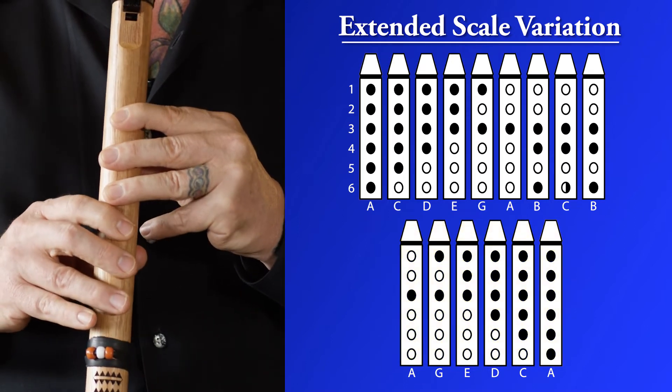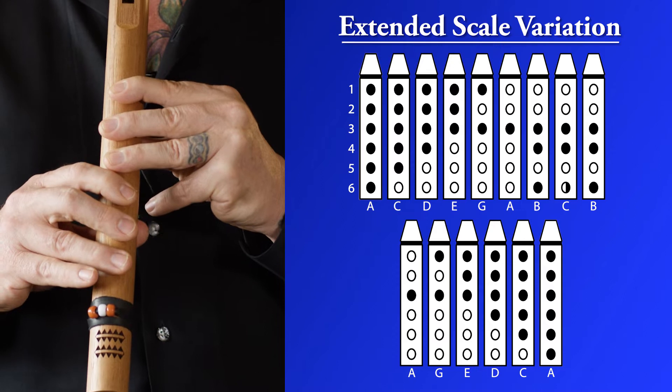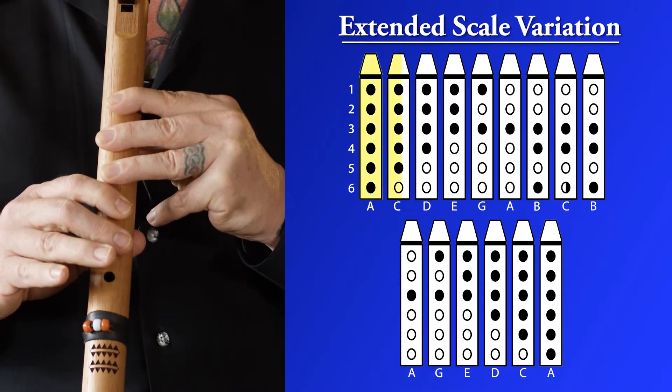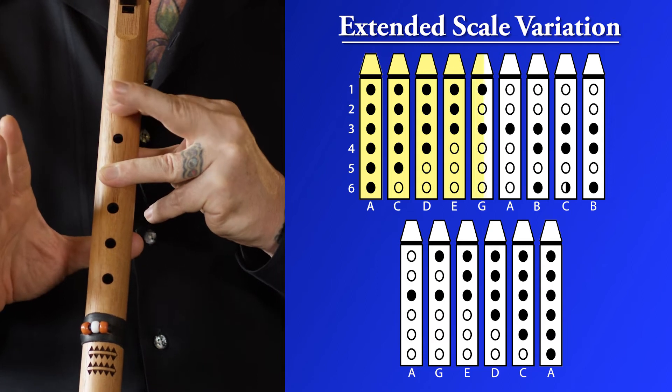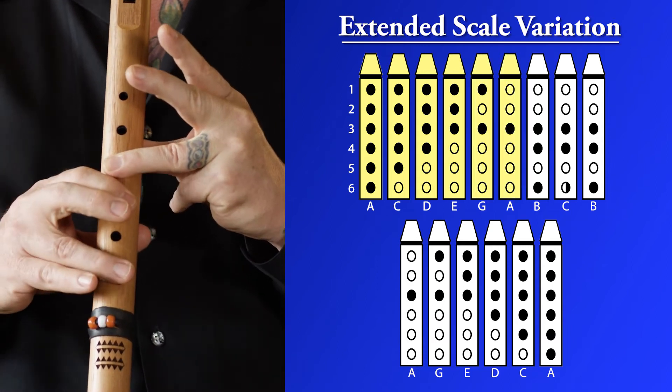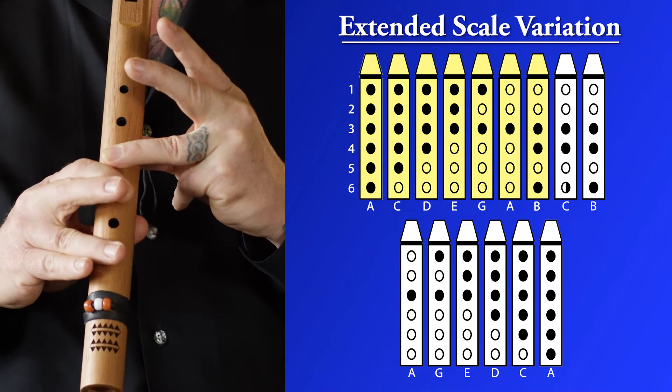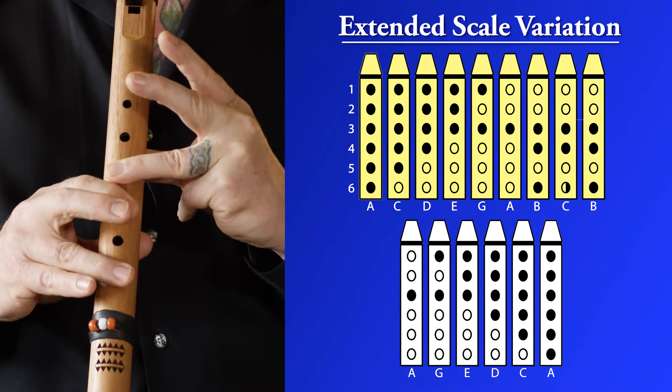So here's what the scale will look like before we practice. Three, four, six, half, cover, open.